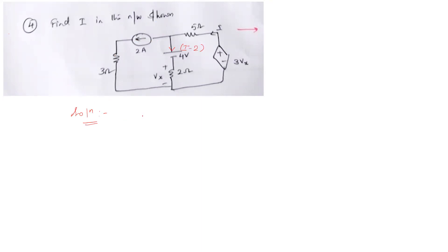From the circuit, the current flowing in this branch is I minus 2. So the value of Vx is 2 times (I minus 2), where 2 is the value of the resistor and (I minus 2) is the current flowing through it. Let us call this equation number 1.